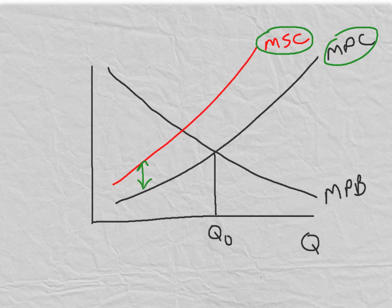The gap between the marginal social cost and the marginal private cost is the measure of the negative externality. Markets which only recognize private costs and private benefits will reach an equilibrium where the two are equal at Q0.